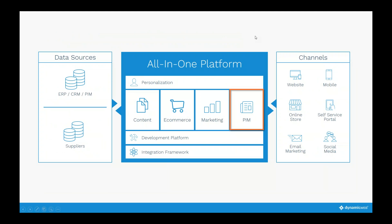Today we're focusing on the PIM as a new addition, but the platform covers content, e-commerce, marketing, and PIM — all in one. We have our data sources on the left side: ERP, CRM, PIM, and suppliers. On the right side are the channels: websites, online stores, email marketing, and so forth. You can use and reuse all the data you have in the all-in-one Dynamic Web platform across those channels.